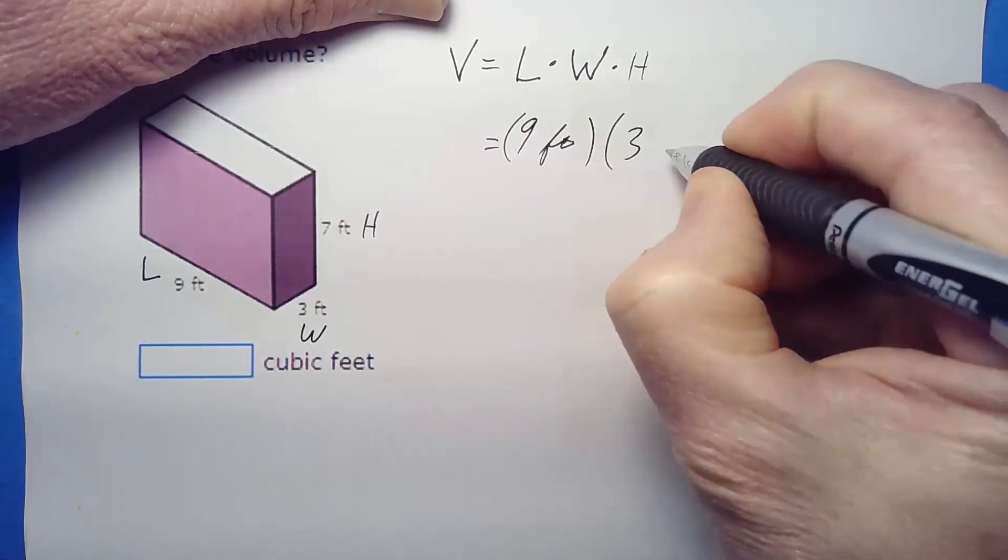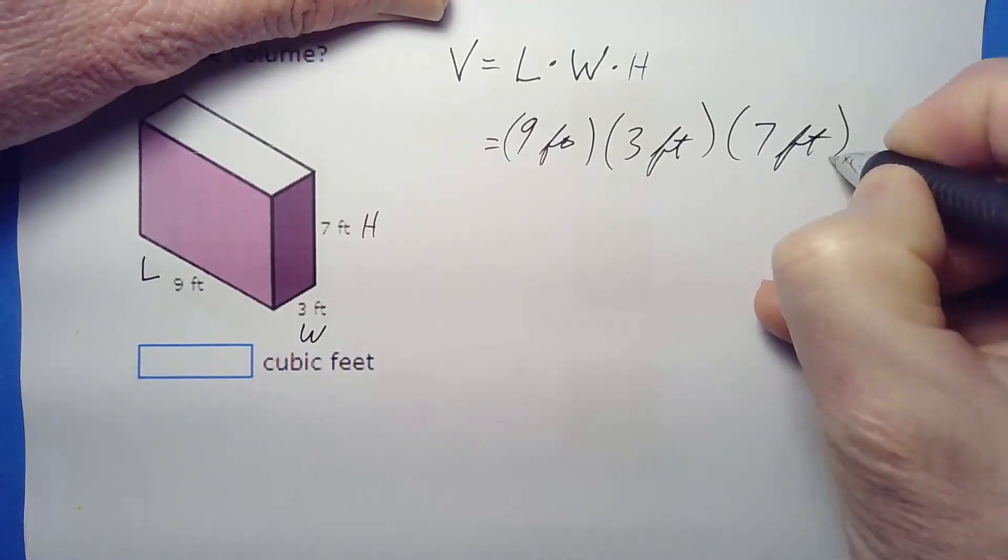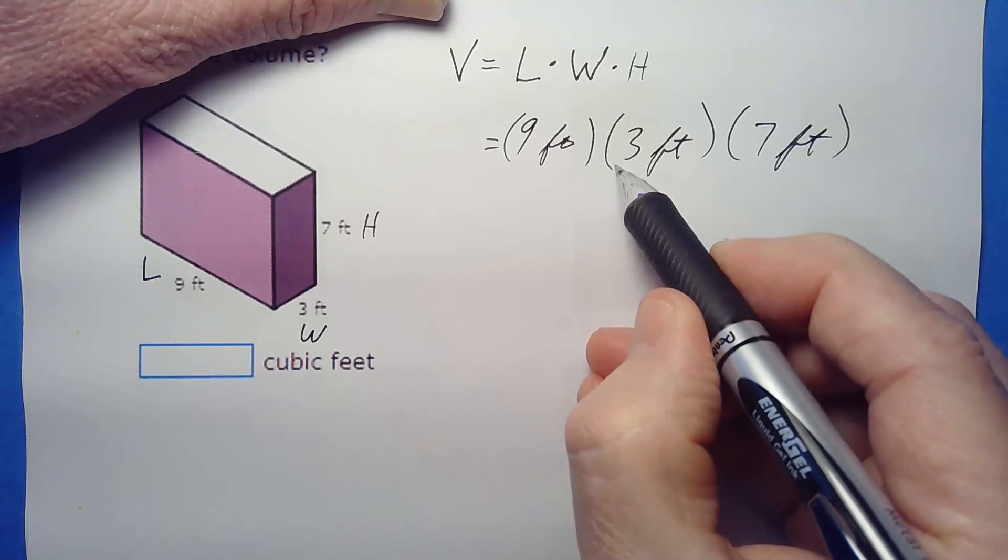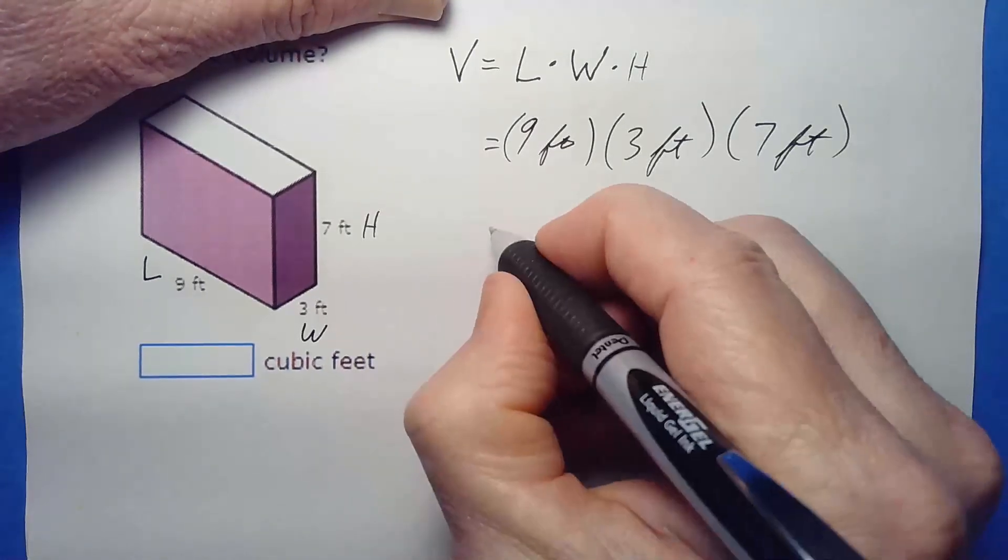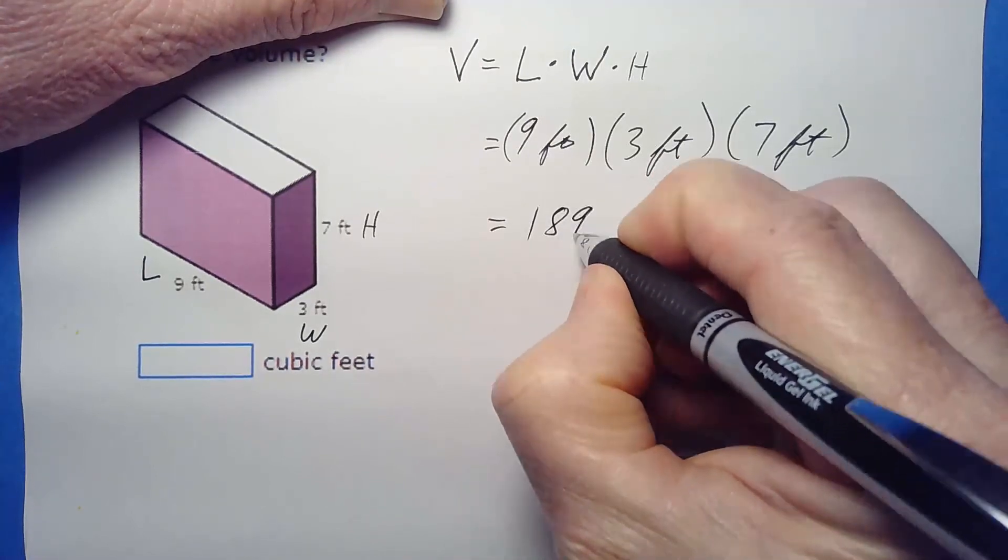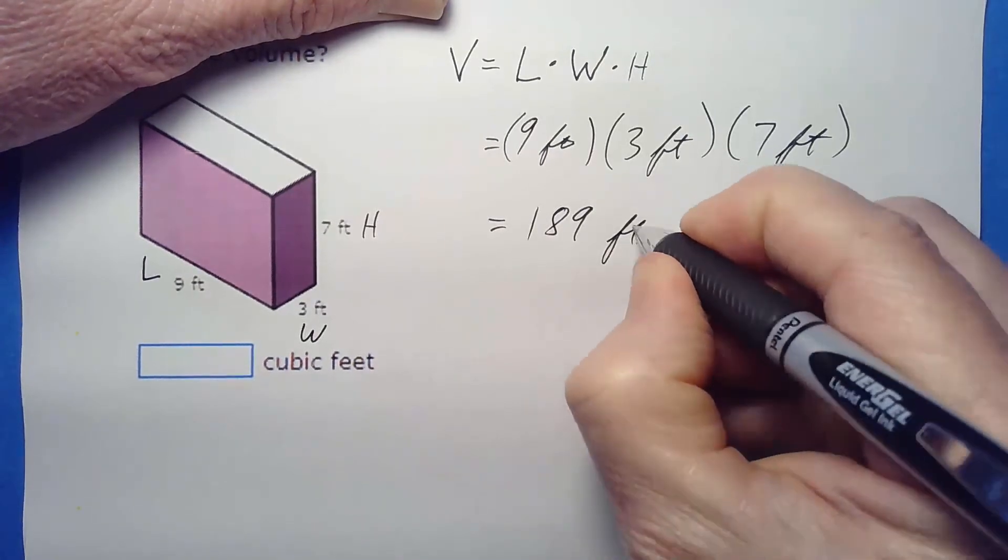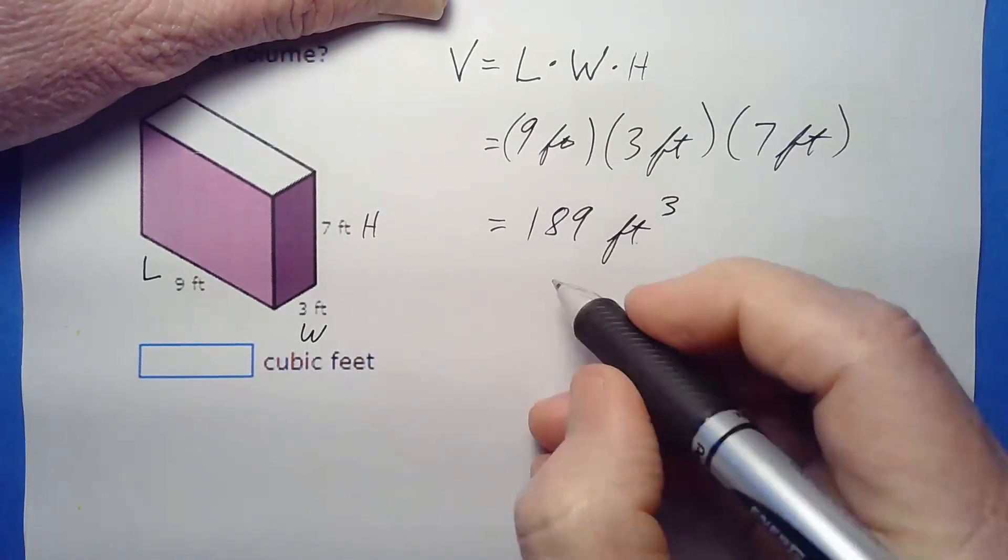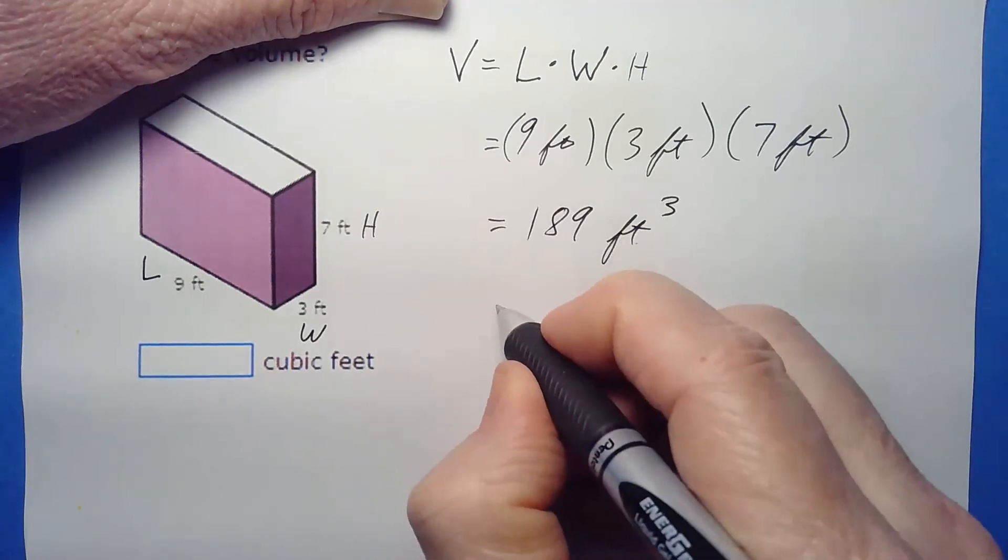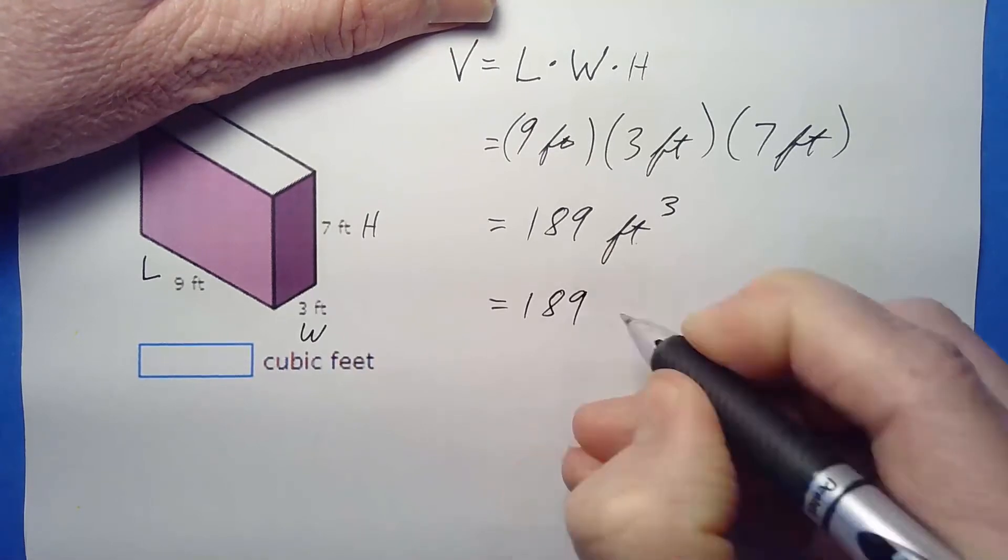Width is 3 feet, and finally our height is 7 feet. All right, we multiply all those out, right? 9 times 3 gives us 27. 27 times 7, probably want to do that on your calculator, but you're gonna get yourself 189.